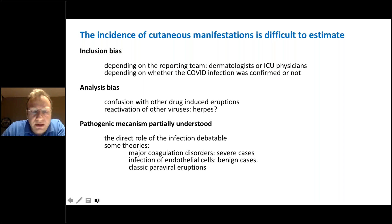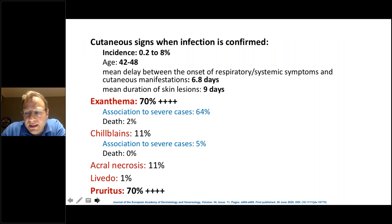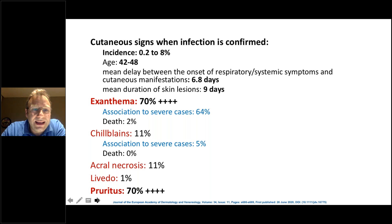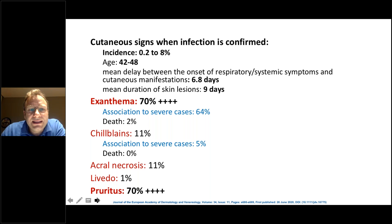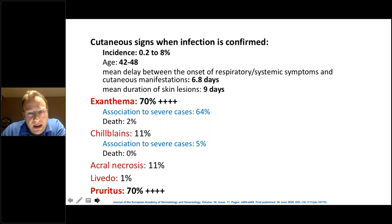I will start with an article published in the Journal of the European Academy of Dermatology in 2020. This was a French cohort with a systematic review of the literature. The incidence varies between 0.2 to 8%. The age range was between 42 to 48. The mean delay between the onset of respiratory symptoms and the cutaneous manifestations was around 6.8 days, and the mean duration of skin lesions was 9 days.